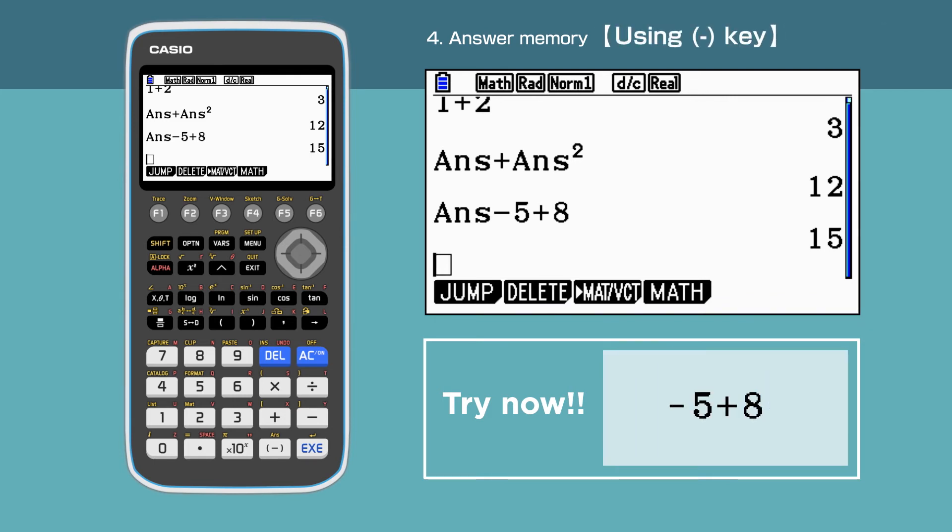Bear in mind, when we start our calculation with a negative number without using Answer Memory function, we need to use the bracket minus key, not the subtract key. The Answer Memory function will not auto-fill when using the bracket minus key.